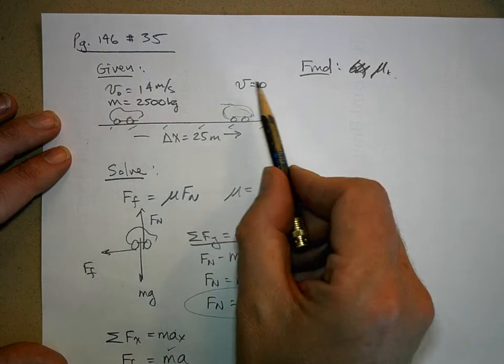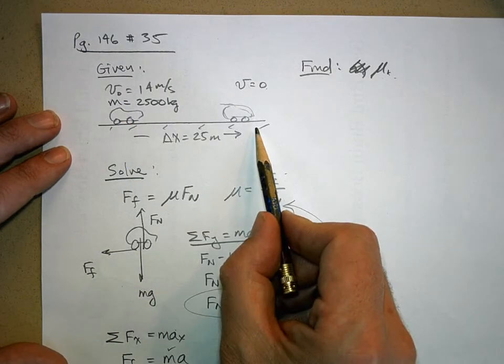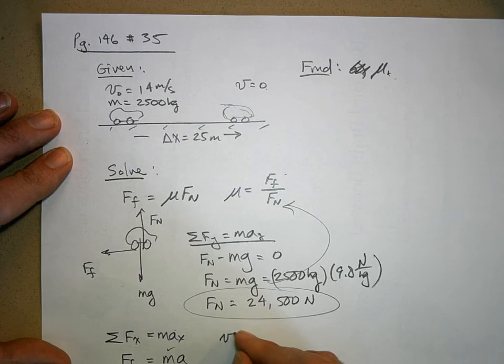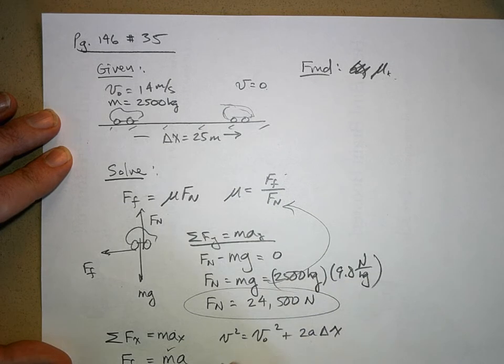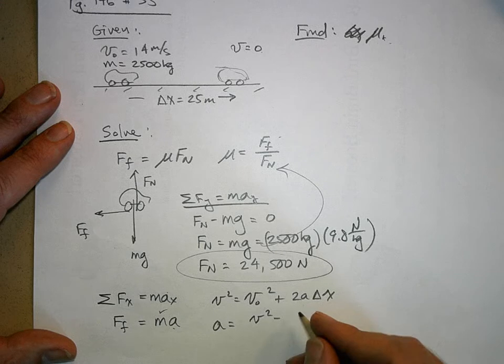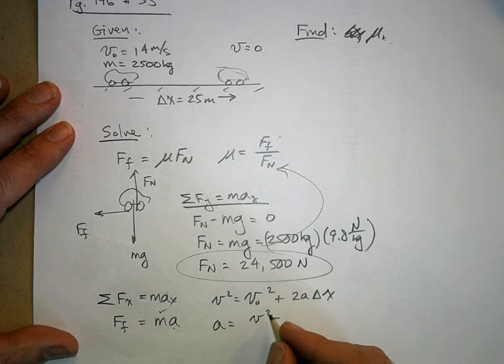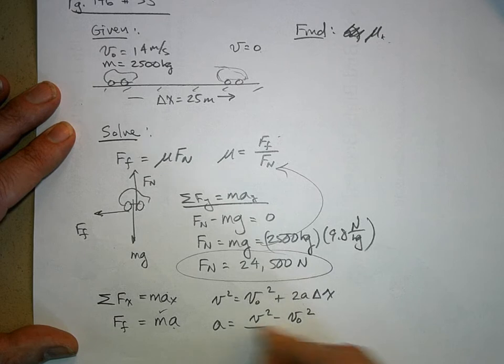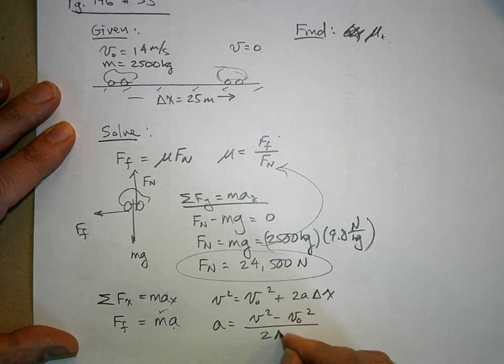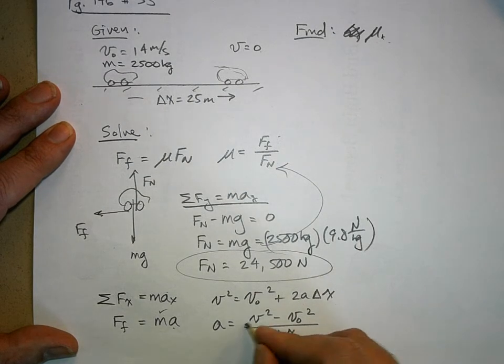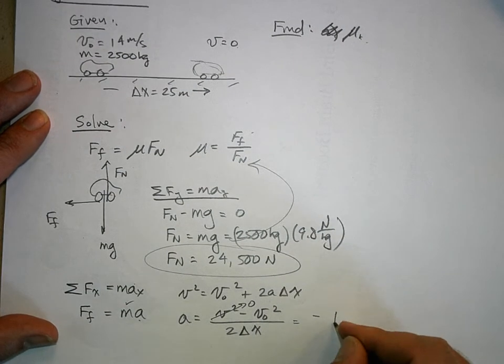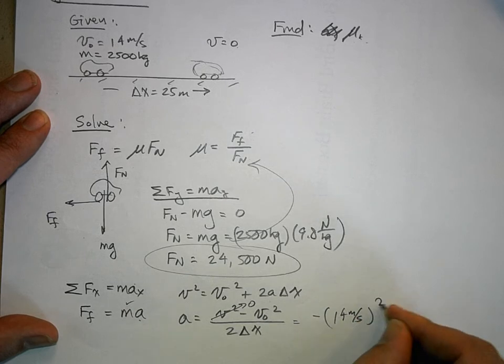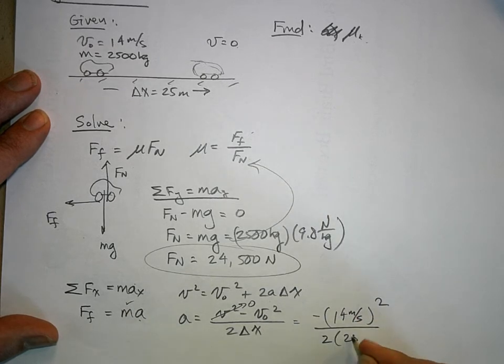Am I given enough information to do that? I know my initial velocity, my final velocity, and the displacement. I'm going to use the fourth kinematic equation. Solve for the acceleration. So this is going to be minus V0 squared divided by 2 delta x. This is 0. So this is negative. V0 is 14 meters per second squared divided by 2 times 25 meters.